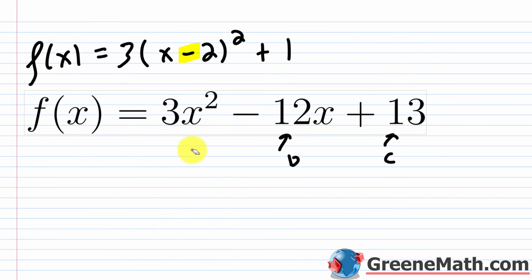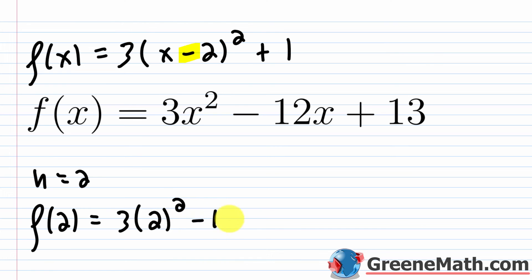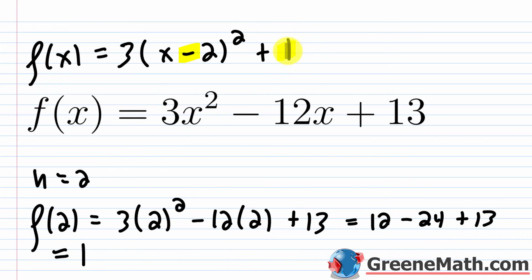For k, we can find f of h, which is f of 2. So f of 2 equals 3 times 2 squared minus 12 times 2 plus 13. Two squared is 4, times 3 is 12. Then minus 24, plus 13. That gives 12 plus 13 equals 25, and 25 minus 24 equals positive 1. So k equals 1, which matches what we found by completing the square.